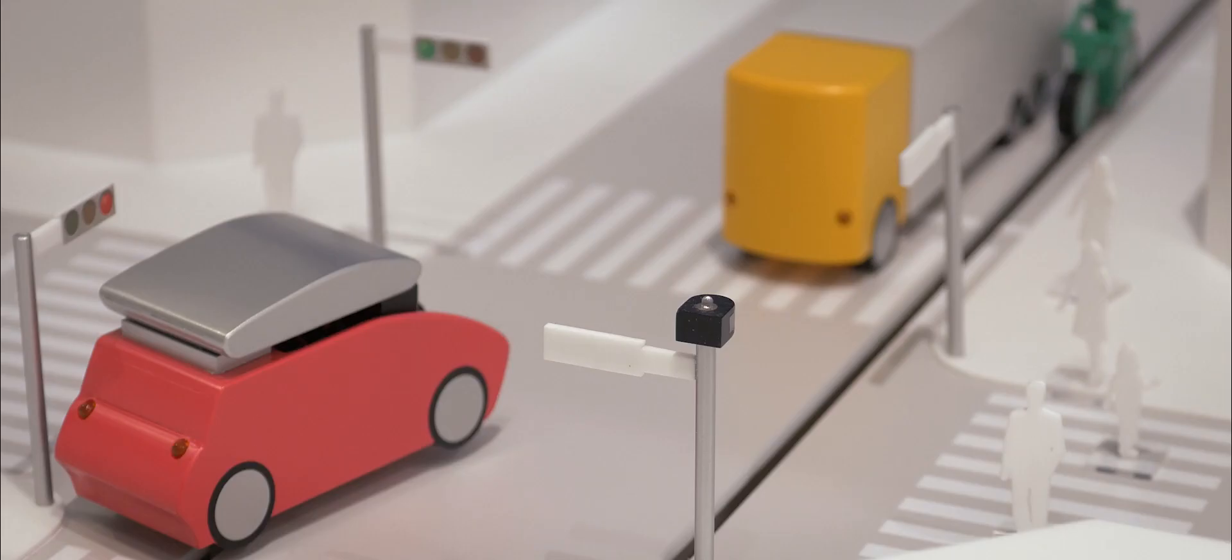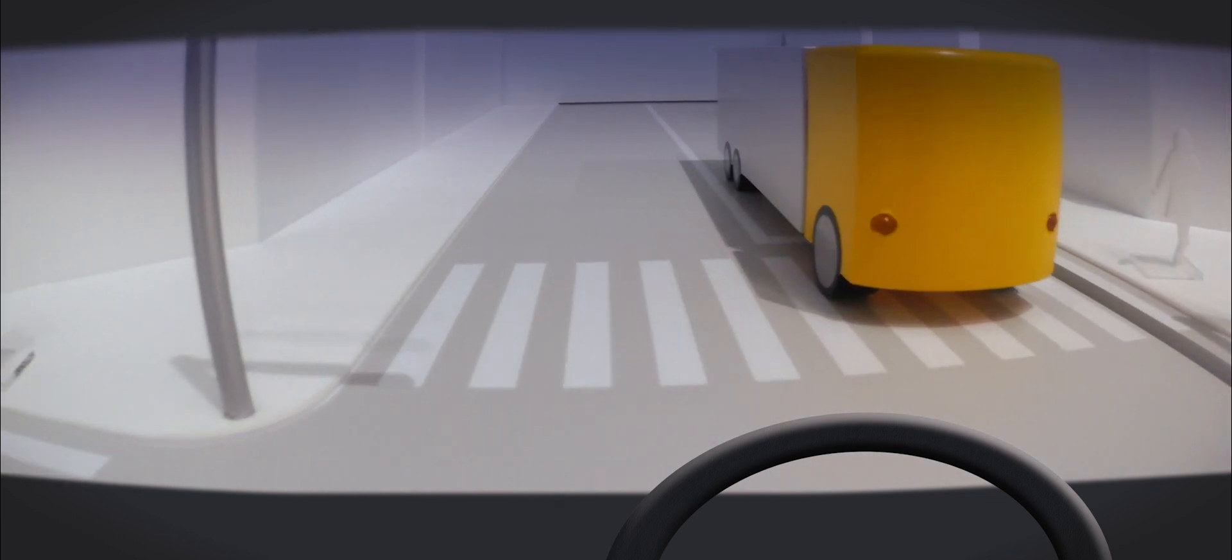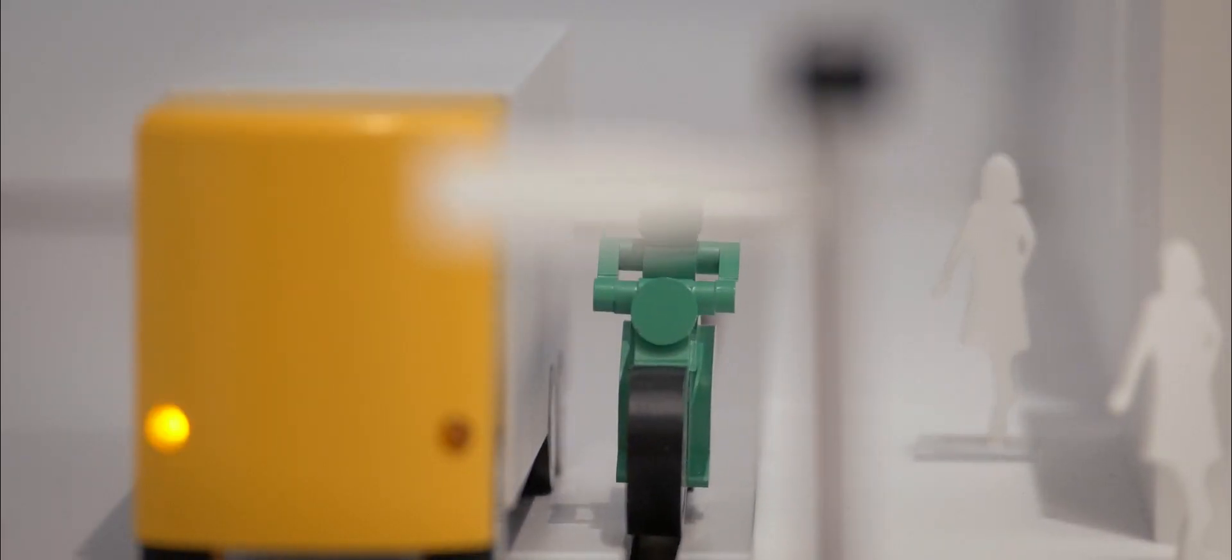Let's look at this example. As the red car approaches the intersection, its driver is not aware of the motorcycle because his view is being blocked by the yellow truck. This is now a dangerous situation.